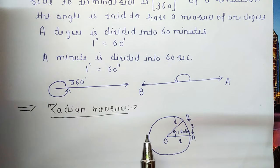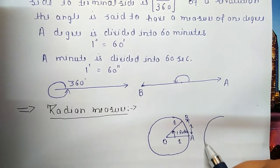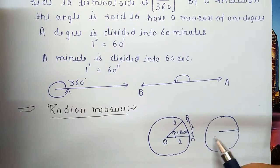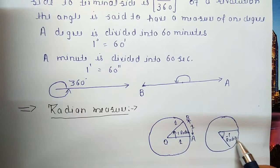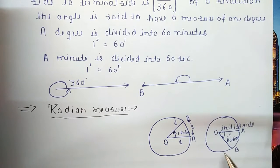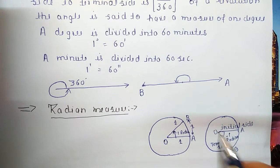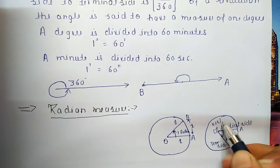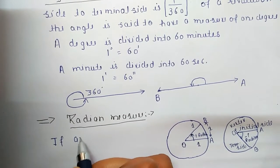An angle subtended at the center by an arc of length one unit in a unit circle is said to have a measure of one radian. Here OA is the initial side, OB is the terminal side, and the angle measures one radian. Similarly, an angle of minus one radian has OA as the initial side, OB as the terminal side, and O as the vertex.